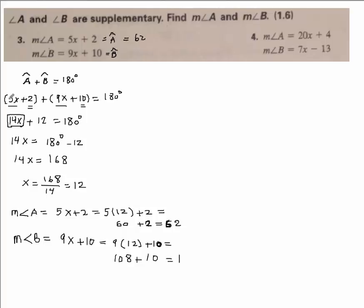...would be 9 times 12 plus 10, that would give me 118. The measure of angle B must be 118. These should have degree signs.